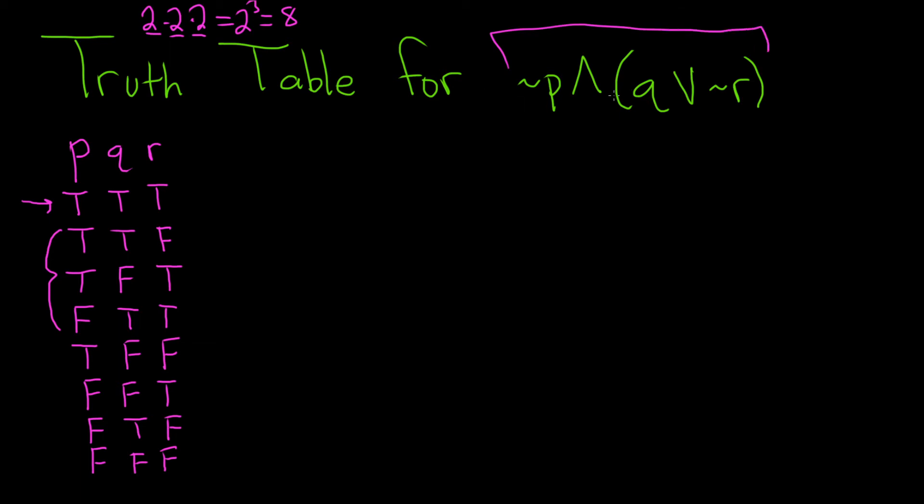We're going to need to work up to this statement by writing the smaller sub-statements. So let's start by looking at not P, and we've already got Q. Looks like we're going to need not R, and then we need Q or not R. And now we have everything necessary to construct the final statement, so that would be not P and (Q or not R).